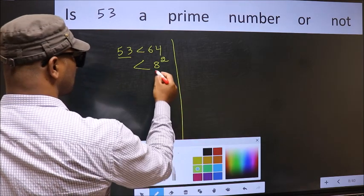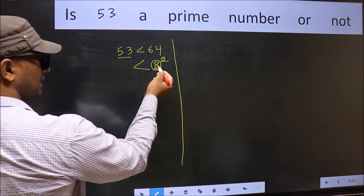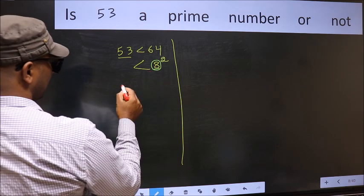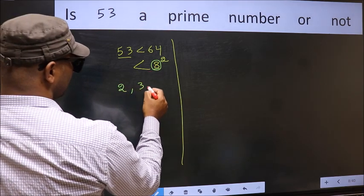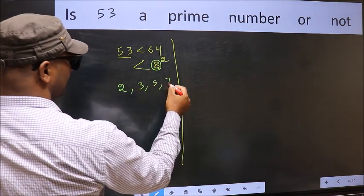Now you should write all the prime numbers less than this number. They are 2, 3, 5, and 7.